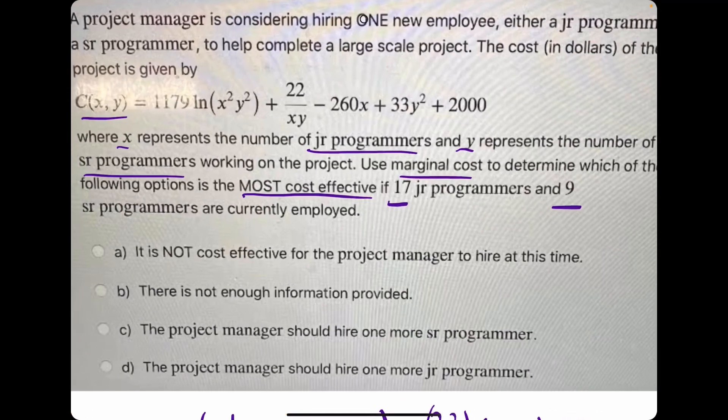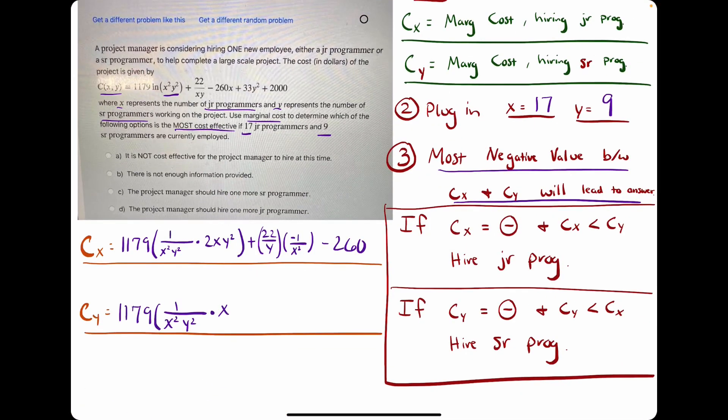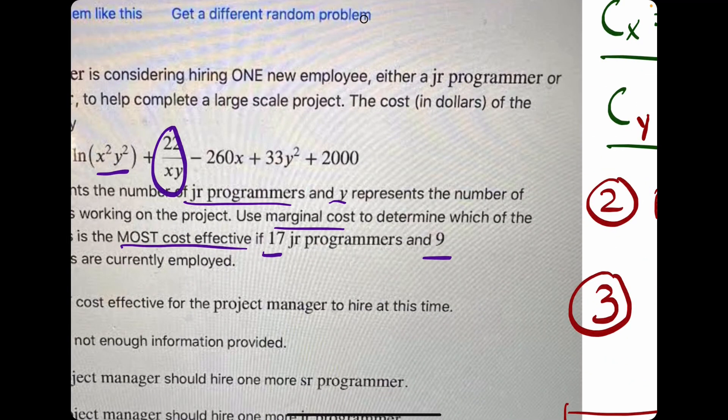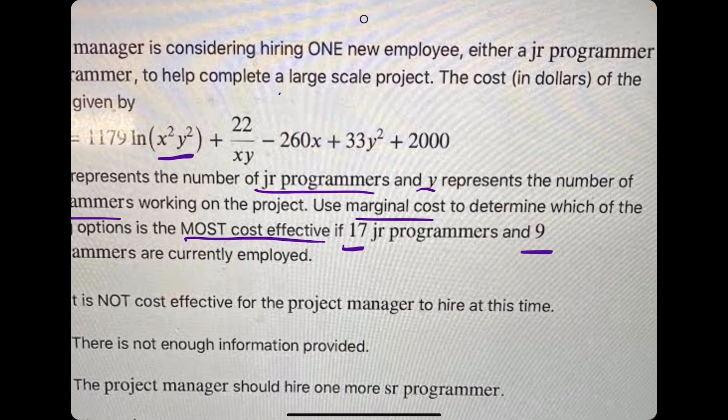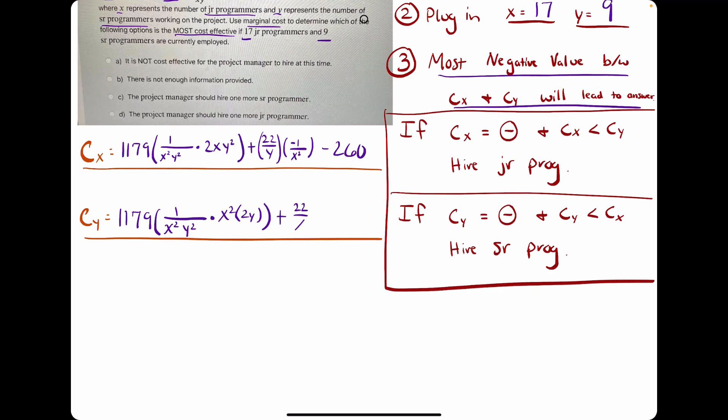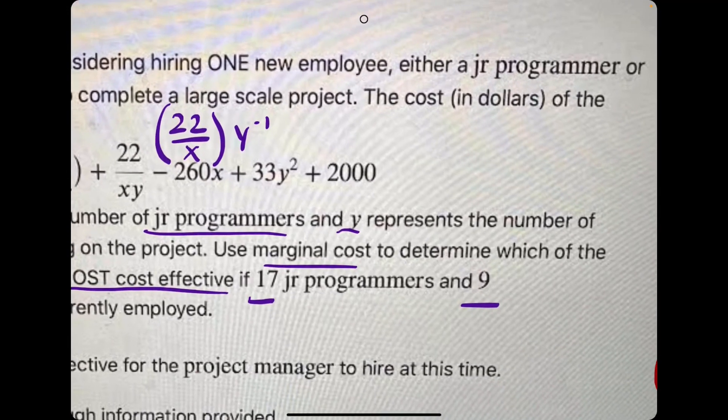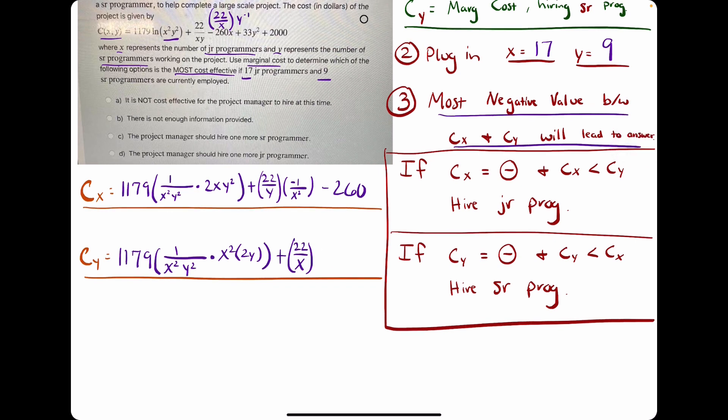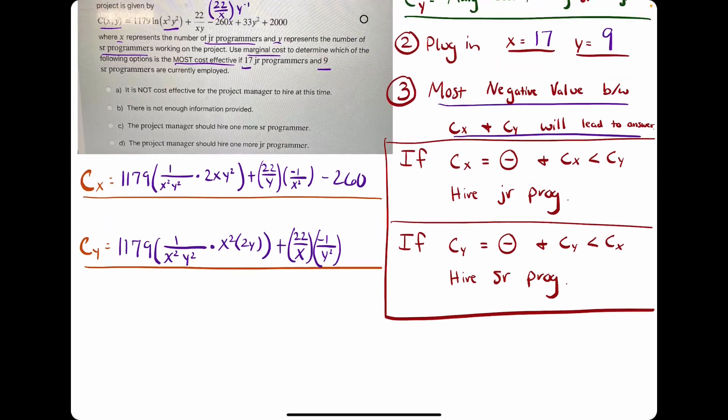But then we multiply by the derivative of the inside, now with respect to y, which is x squared times 2y. We leave the x squared, but we take the derivative of the y term, which is 2y. So then we'll get a very similar derivative for this term again, since we just have x, y on the bottom. So we essentially rewrite it as 22 over x times y to the negative 1. So we can bring down the 22 over x. And then we take the derivative of this y to the negative 1, and we get negative y to the negative 2, which we then rewrite as negative 1 over y squared. So essentially the same derivative as we had before, just swapping x and y.